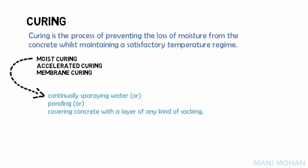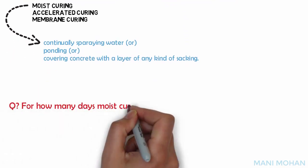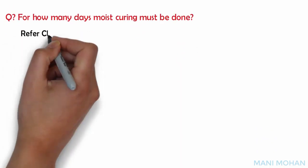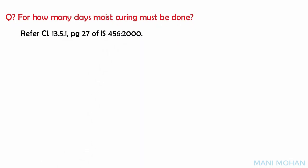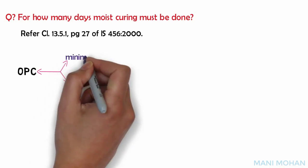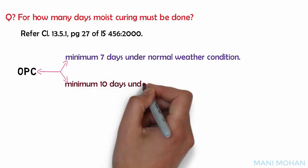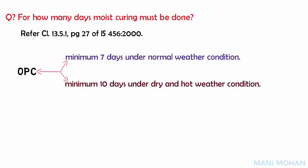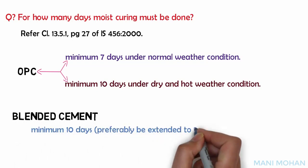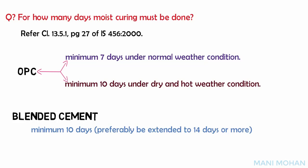For how many days must moist curing be done? Clause 13.5.1, page 27 of IS 456-2000 specifies the duration as at least 7 days from the date of placing of concrete in the case of ordinary Portland cement under normal weather conditions, and at least 10 days when dry and hot weather conditions are encountered. When mineral admixtures or blended cements are used, the recommended minimum period is 10 days, which should preferably be extended to 14 days or more.